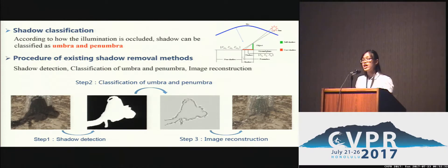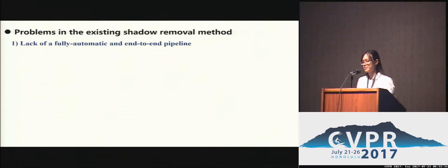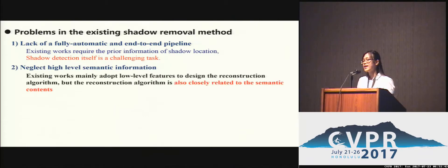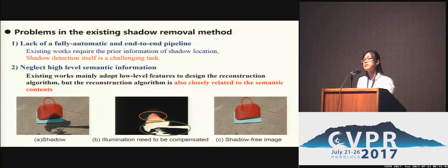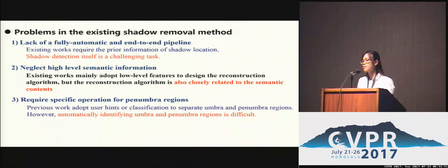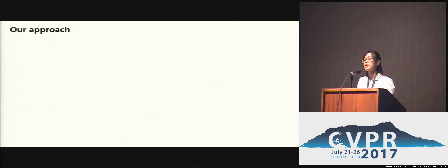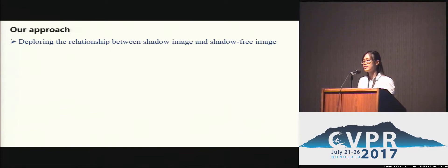This traditional shadow removal pipeline often has the following three limitations. First, lack of a fully automatic and end-to-end pipeline. Second, neglected high-level semantic information. They also require specific operations for the penumbra regions. Thus, we hope our method can solve these three limitations.